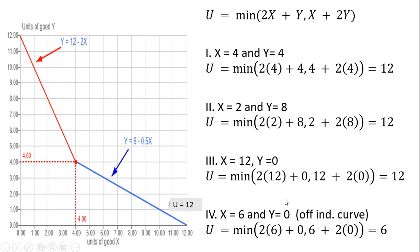Now let's look at a point off the indifference curve — we'll get a level of utility different than 12. Let's try x equals 6 and y equals 0, which was part of the red line we initially drew but is off the indifference curve. Plugging in: the left-hand side gives 2 times 6 plus 0, which is 12. The right-hand side gives 6 plus 2 times 0, which is 6. So the minimum of 12 and 6 is 6 — we do not get 12 units of satisfaction at this point, only 6.